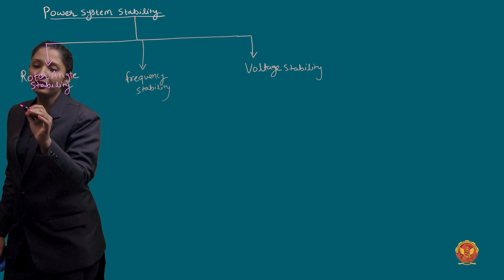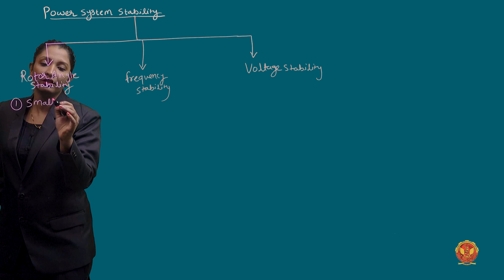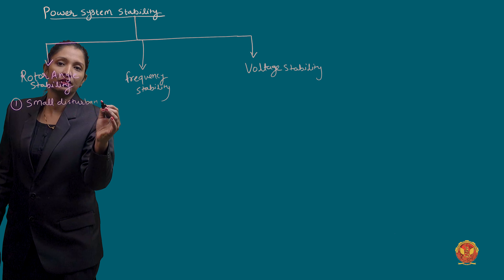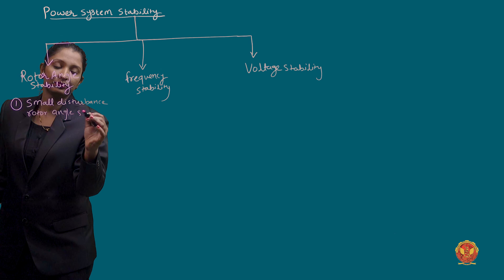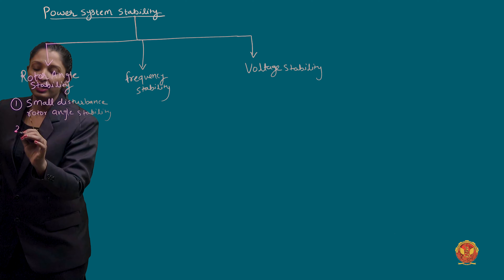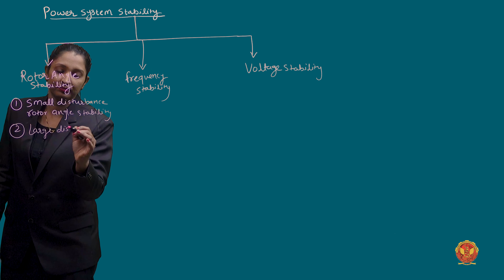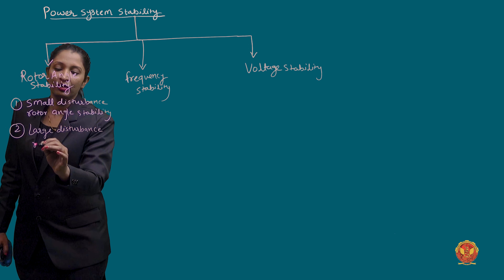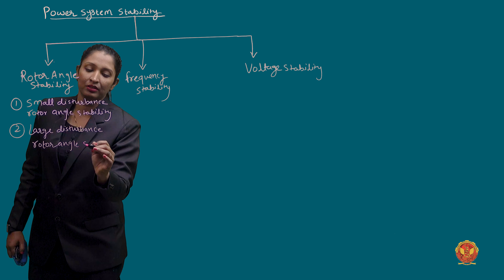In the rotor angle stability, there are two sub-categories. The first is the small disturbance rotor angle stability. The second is the large disturbance rotor angle stability.